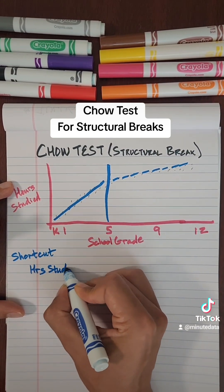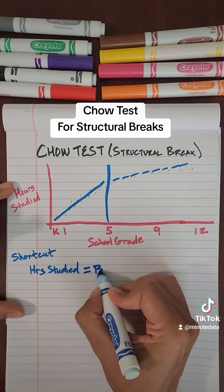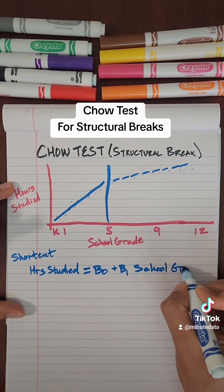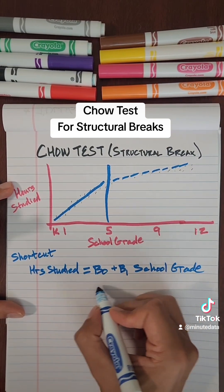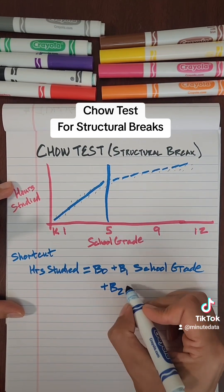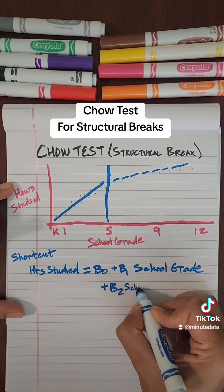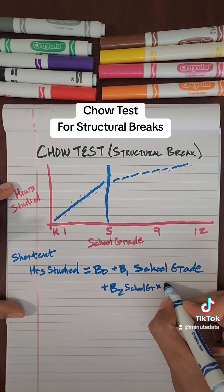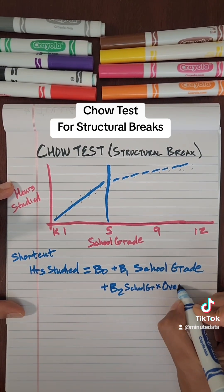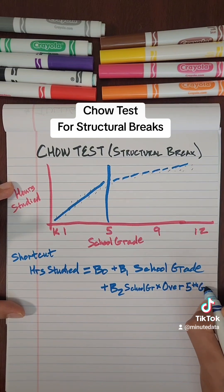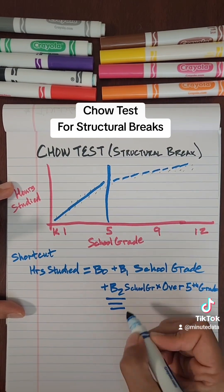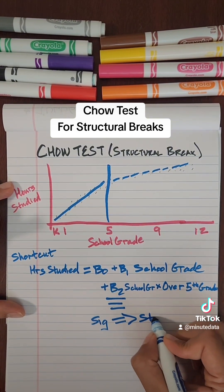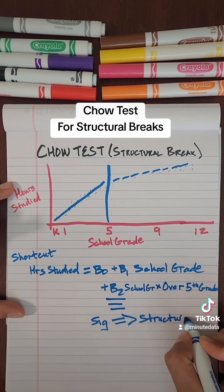You can look at hours studied and regress that on the school grade. Then you'll have a second interaction term of your school grade times this indicator — this dummy variable — for over 5th grade. If this interaction term is significant, it implies there is a structural break beginning at 5th grade.